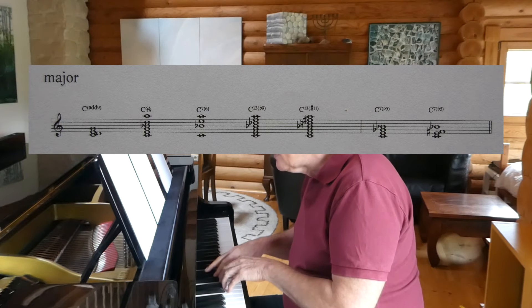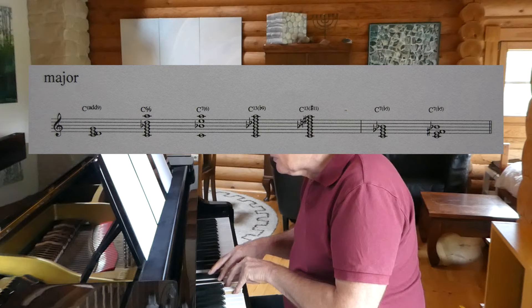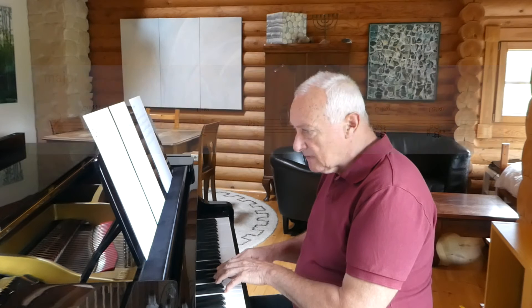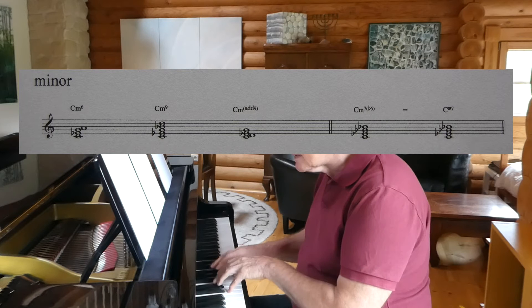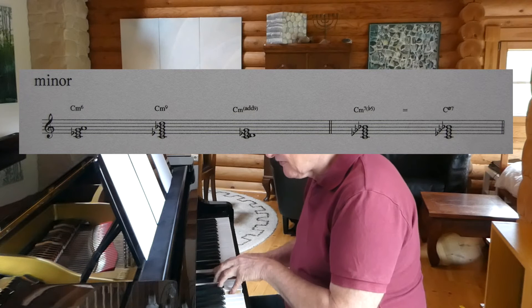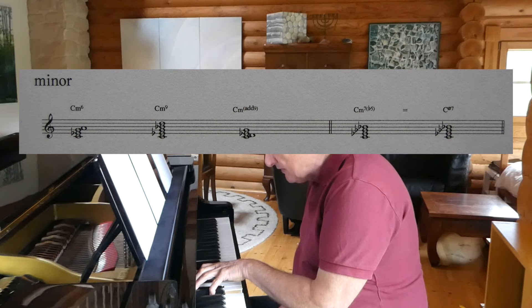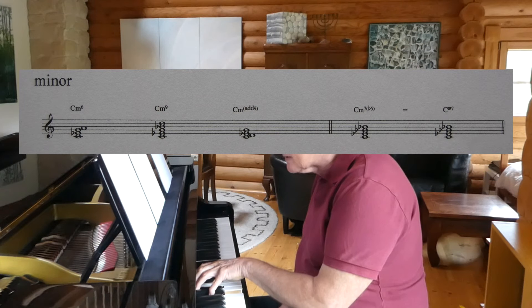Staying with the basically major triads, we have the C7 with a flattened 5th, which can also be written with an F sharp or a G flat. Minor chords: we have the triad with its 6th — Cm6 — the D minor 7th with its 9th, and a C minor with an added 9th. And we should also talk about the half-diminished 7th, which is often written as a C minor 7th with a flattened 5th.